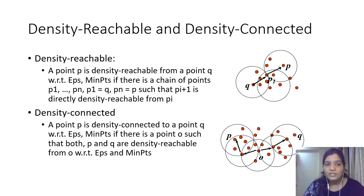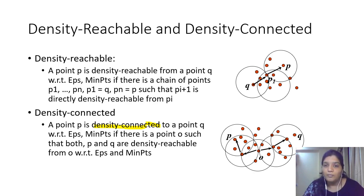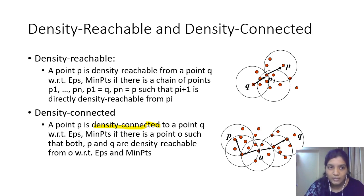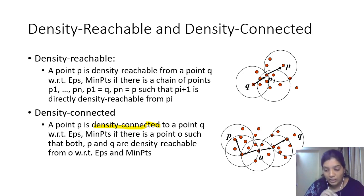Density connected: a point P is density connected to point Q with respect to epsilon and minimum points if there exists a point O such that both P and Q are density reachable from O. This concept helps us combine multiple clusters. So to revise: for directly density reachable, P and Q are directly density reachable if and only if P belongs to the neighborhood of Q and Q is a core point — Q must be a core point for P to be directly density reachable from Q.